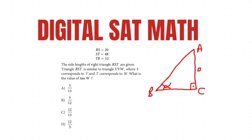Let's determine what sine is. For sine alpha, imagine you're sitting on corner B of the triangle and looking across. What you see is the opposite side. So sine is the opposite side over the hypotenuse. In this triangle, side c is the hypotenuse, so sine alpha equals a over c.